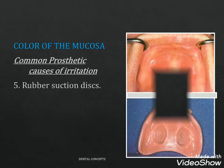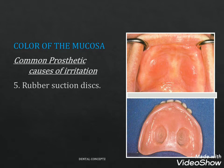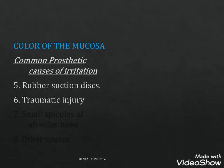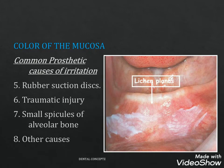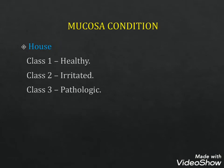Rubber suction discs result in negative pressure under the denture and further hyperplasia and inflammation of the mucous membrane. Other causes include traumatic injury, small spicules of angular bone, or conditions like carcinoma and mucosal conditions like lichen planus. The mucosal condition can be classified into healthy, irritated and pathologic mucosa.